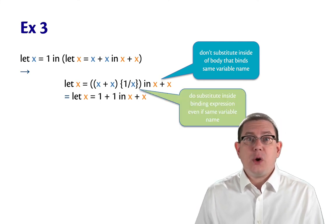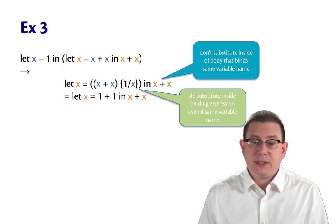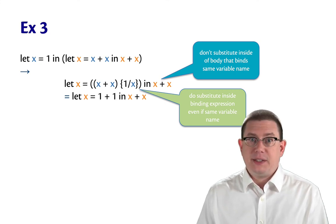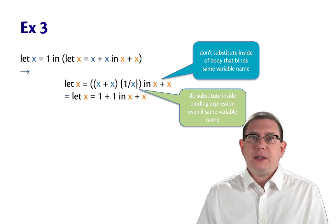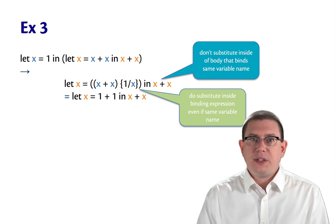So the new thing here is that we do substitute inside a binding expression, even if it's the same variable name. Therefore, substitution inside of the binding versus the body expressions works different.